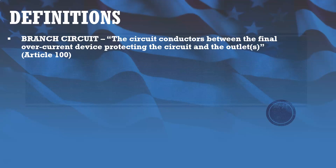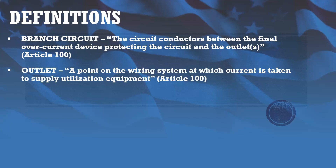Definitions. A branch circuit is the circuit conductors between the final overcurrent device protecting the circuit and the outlets. An example would be, in a typical residential situation, a circuit supplying receptacles or a circuit supplying light fixtures. We also have the definition of an outlet: a point on the wiring system at which current is taken to supply utilization equipment — in other words, where we're utilizing current in the circuit.